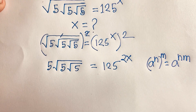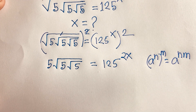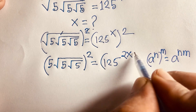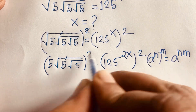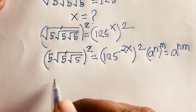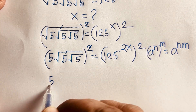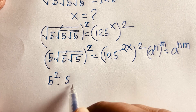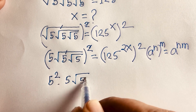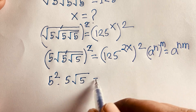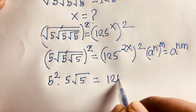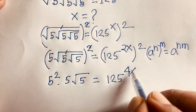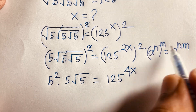Then again I use both sides whole square, and I can easily cancel the square root again. We'll find out here is 5 squared times 5 times square root of 5, and this is equal to 125 to the power 4x.